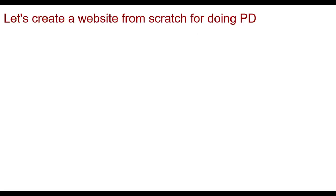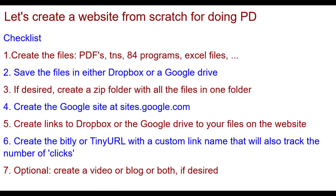So let's go ahead and create a website from scratch for doing PD. Here's our checklist: create the files first, whatever they are. Save them in either Dropbox or Google Drive. If desired, create a zip folder with all the files in one folder — that makes an advantage for the user. Create the Google site at sites.google.com. Create links to Dropbox or Google Drive to your files on the website. Create the bit.ly or tinyurl with a custom link name that will also track the number of clicks. And as an option, you can create a video, blog, or both if desired.